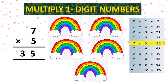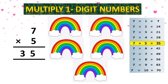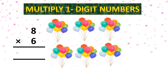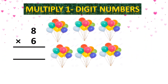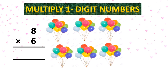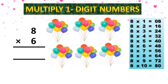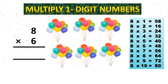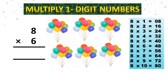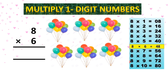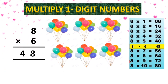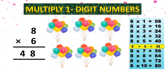Agar aap 7 ka times table 5 times padhain, ya 5 ka times table 7 times padhain, toh dono ka answer same hoga. Now look here, it is your next question — 8 multiplied by 6. You have 6 bunches of 8 balloons. Aapke paas 6 bunches hain, aur har bunch mein 8 balloons hain. 8 ones are 8, 8 twos are 16, 8 threes are 24, 8 fours are 32, 8 fives are 40, 8 sixes are 48. So it means that the total number of balloons are 48.